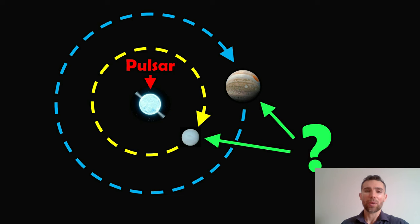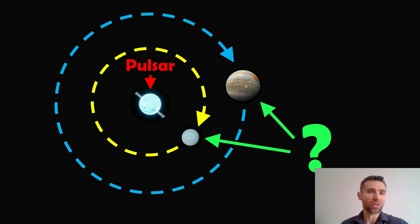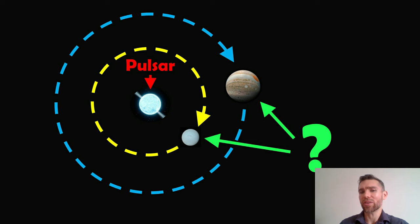Welcome to this video. My name is Phil and I am a senior lecturer in astrophysics at the University of Lincoln. I wanted to use this video to discuss planets that are orbiting pulsars, the fact that they're actually very rare, and how they actually get there — because it's quite unusual or confusing as to why they might be there, if we understand what a pulsar is and how pulsars actually form.